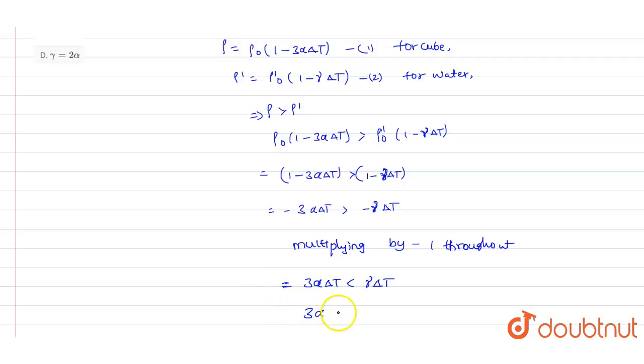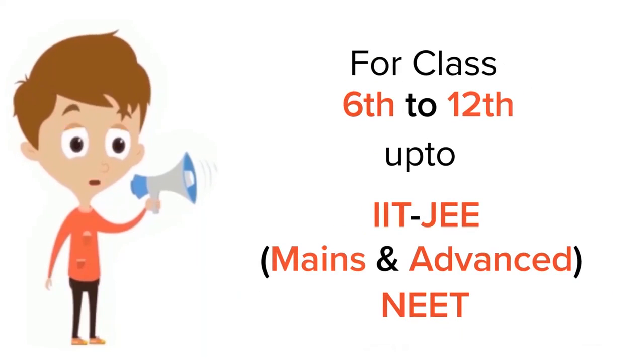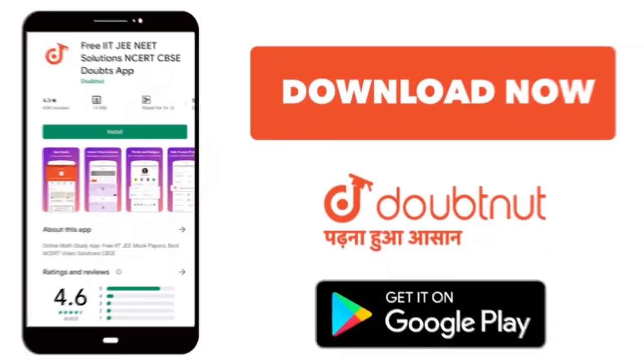So this is the required answer. Out of these four options, if you observe, option B is the correct answer for this question. Thank you for class 6-12, IIT JEE and NEET level, trusted by more than 5 crore students. Download Doubtnet app today.